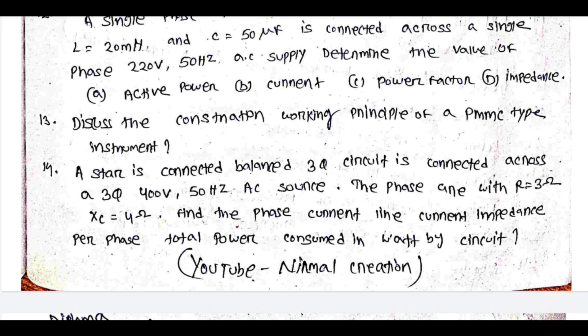Discuss the construction and working principle of a PMMC type instrument. A star-connected balanced three-phase circuit is connected across a three-phase 400 volt, 50 Hz AC source, with phase resistance R = 3 ohm. Find the phase current, line current, impedance per phase, and total power consumed by the circuit.